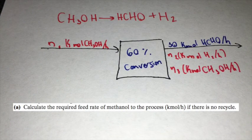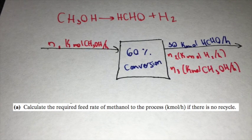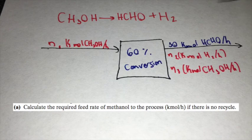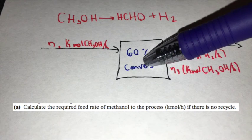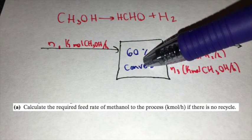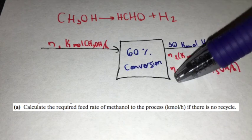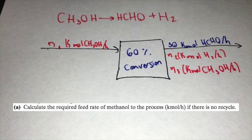Now to calculate the required feed rate of methanol to the process without recycle, we need to remember that a single conversion of a process is the ratio of amount of reactant consumed in the reactor to amount of reactant fed to the reactor.